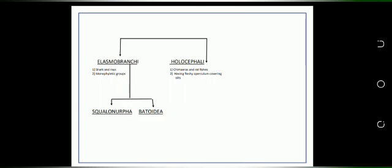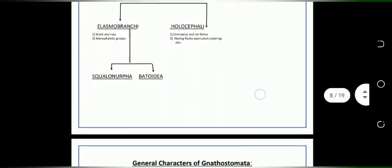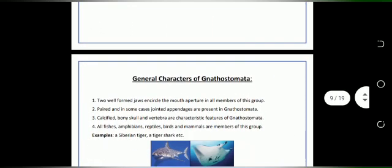Under the subclass Elasmobranchii, two orders are divided. First order is Squalomorpha and second order is Batoidea. This was all about the classification of Gnathostomata.